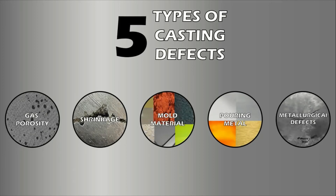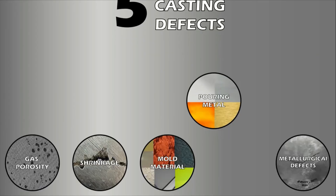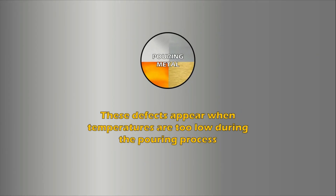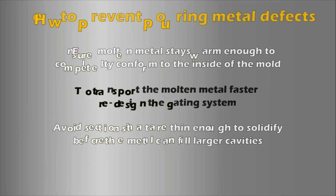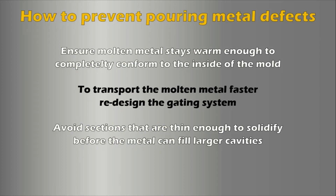For pouring metal defects, as opposed to many other defects, these appear when temperatures are too low during the pouring process. They fall into three categories: cold shot, cold shut, and miss runs. Pouring metal defects can for the most part be avoided by ensuring the molten metal stays warm enough to completely conform to the inside of the mold. The gating system can also be redesigned to transport the molten metal faster, or to avoid sections that are thin enough to solidify before the metal can fill larger cavities beyond them.